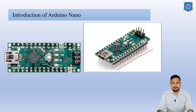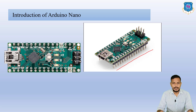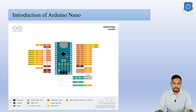To connect these legs, or pins, you have to use a breadboard. On the breadboard you place the Arduino Nano and then connect wires according to your application. Here you can see the pin diagram of Arduino Nano.